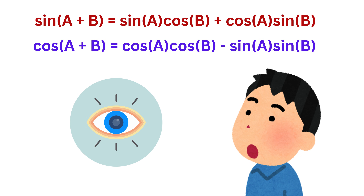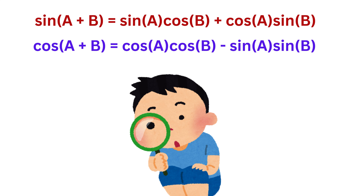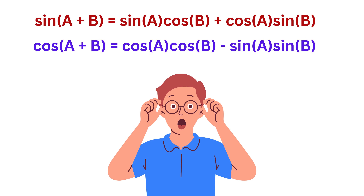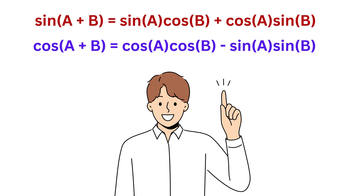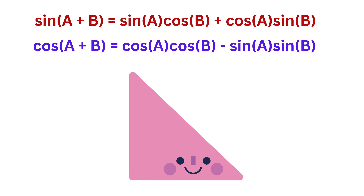Today, I am going to show you a visual proof of sine of A plus B and cosine of A plus B. You might have seen these formulas before and felt they were a bit magical or too complicated to calculate algebraically, but today I will show you how to find these formulas using simple right triangles.